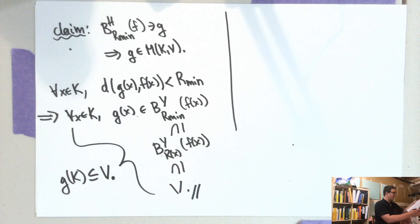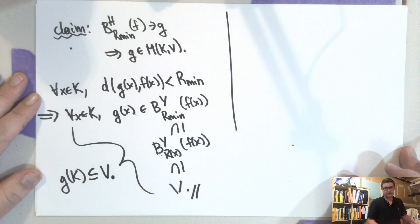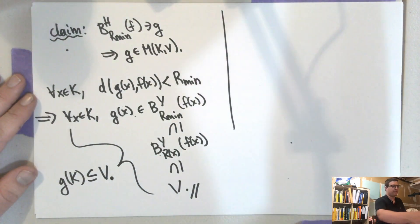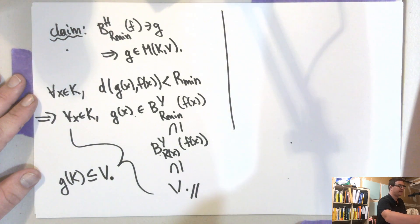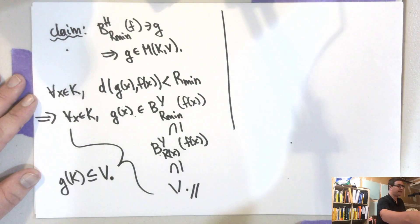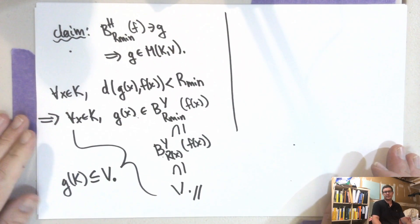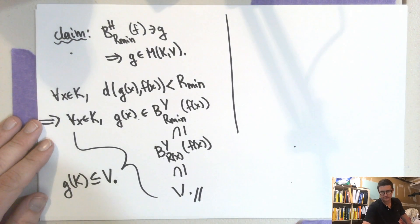That concludes this portion — the proof that the metric topology and the compact-open topology are the same in this example.